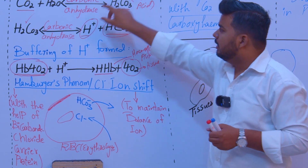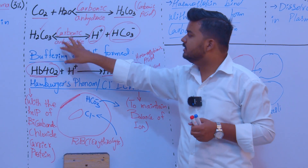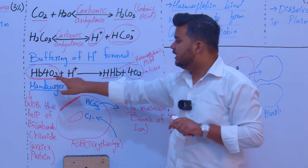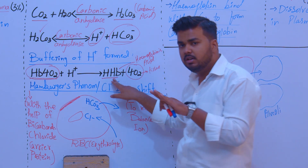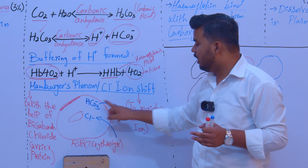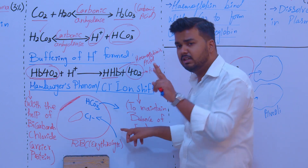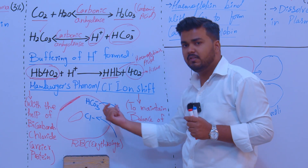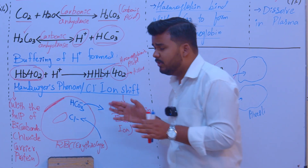To summarize: carbon dioxide reacts with water to form carbonic acid. Carbonic acid dissociates into hydrogen ions and bicarbonate ions. Hydrogen ions react with oxyhemoglobin to form hemoglobinic acid, buffering the hydrogen. Bicarbonate ions move outside and chloride ions move inside — two ions in opposite directions — and this whole process is called Hamburger's phenomenon.